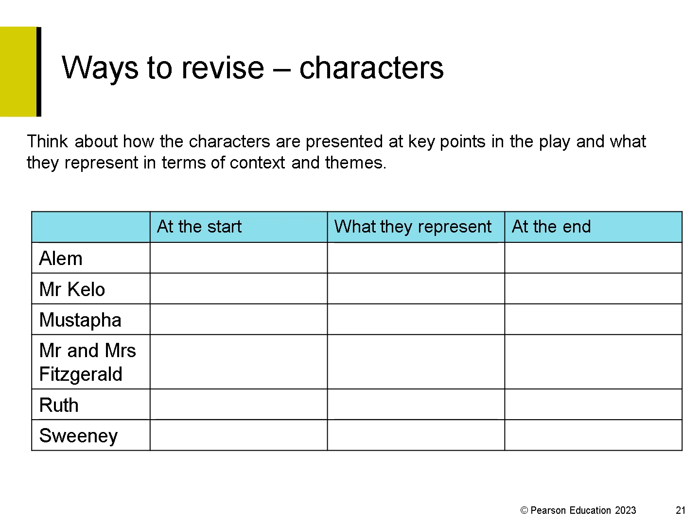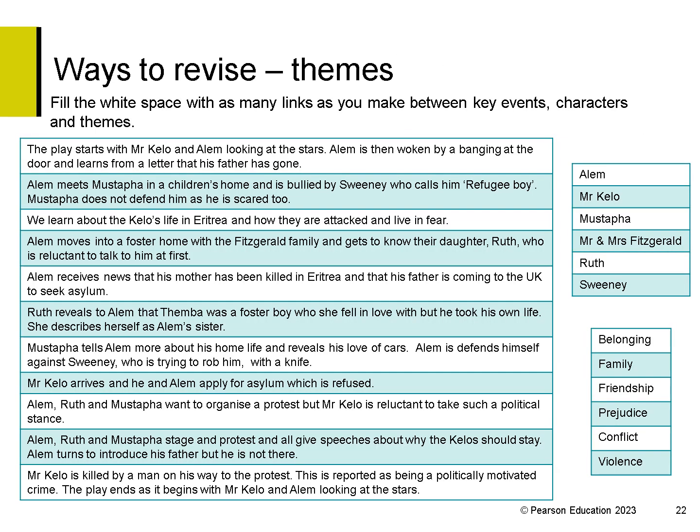This is a simple table you may wish to give to students to help them think about how the characters are presented at key points in the play and what they represent in terms of context and themes. And here is a table to help with themes. The large table is taken from the Knowledge Organiser on the website. You may wish to put all of this on a larger piece of A3 paper for students, so they can use the white space around the three tables to make links between key events, characters and themes.